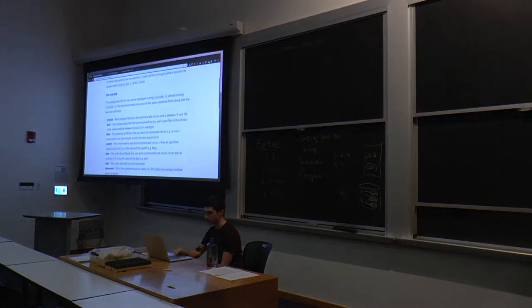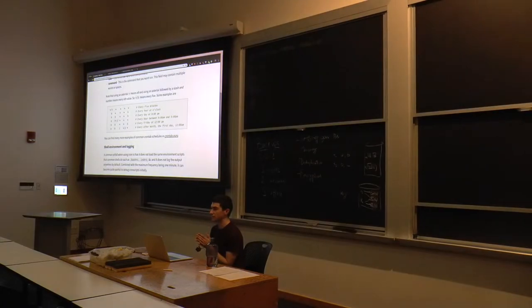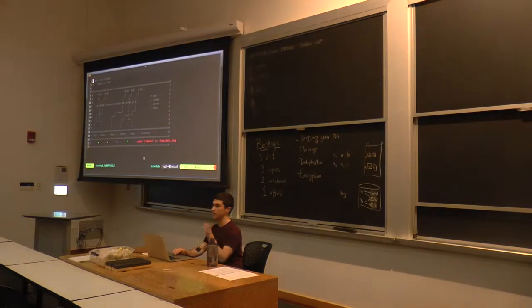So, to give some examples, we have something like this. Asterisk slash five. Asterisk means all, just match to all of them, and asterisk slash a number means match to every nth case. So for example, something that is asterisk slash five, first, if something is all asterisks, it means run every minute.